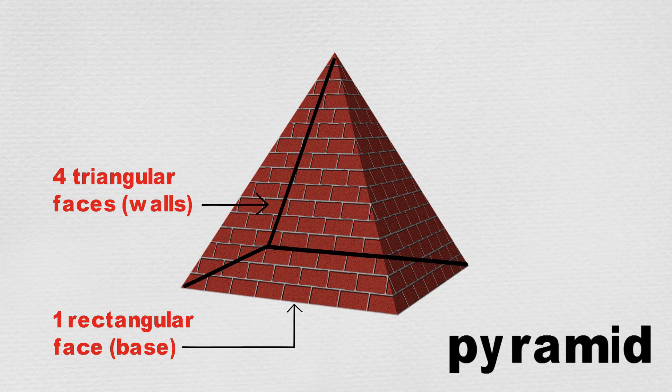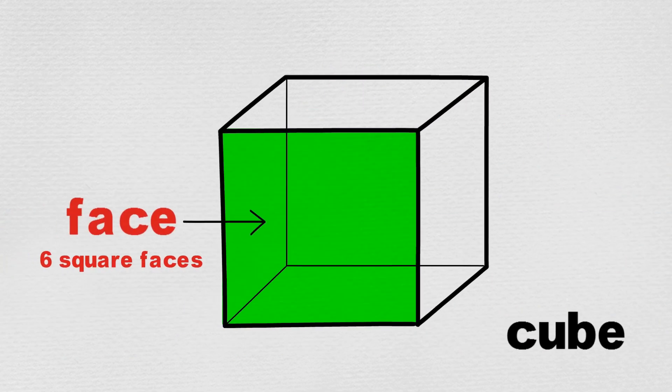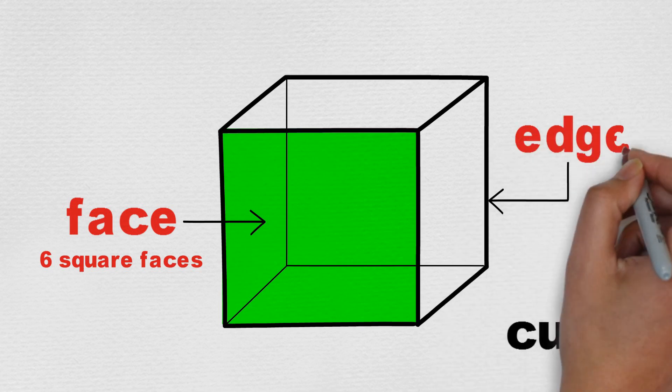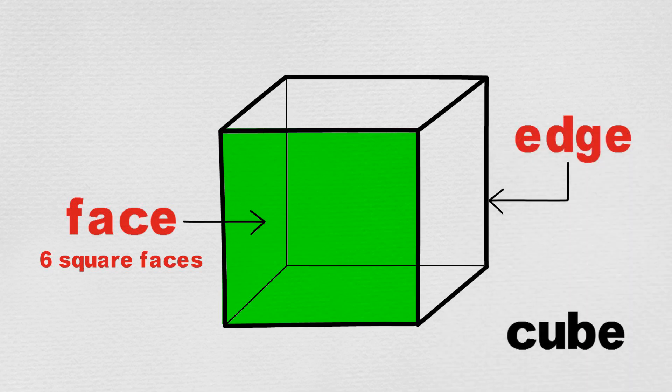The straight line that joins two faces of a solid object, like this, is called an edge. A cube has 12 edges.